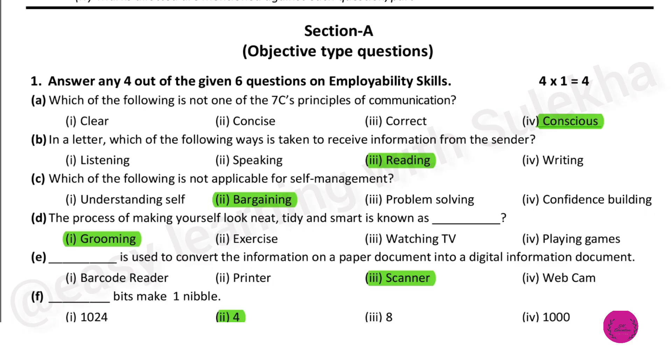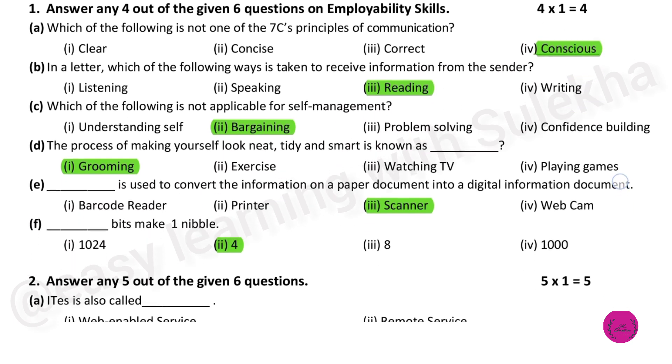Which of the following is not applicable for self-management? The answer is bargaining. The process of making yourself look neat, tidy, and smart is known as grooming.